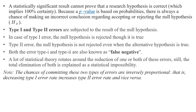If we decrease the Type 1 error rate, then the Type 2 error rate will increase. And if we reduce the Type 2 error rate, then the chance of a Type 1 error will increase. There is always a trade-off between the two.